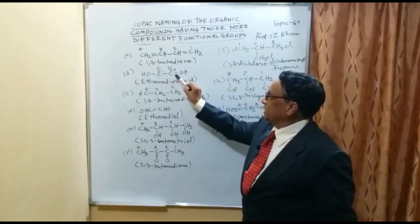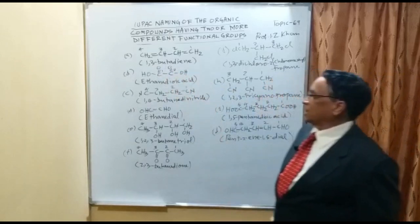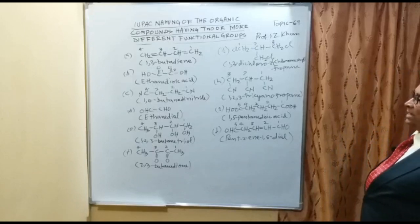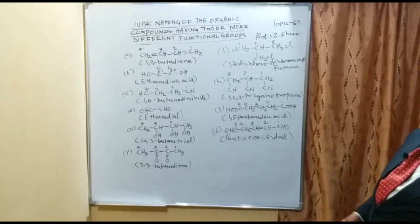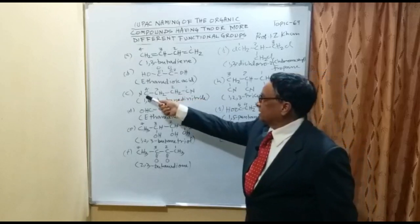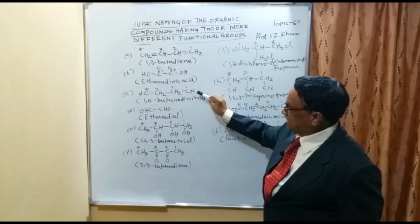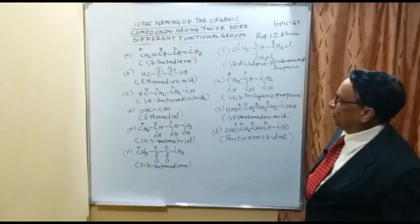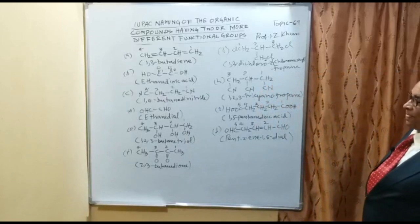Example C has CN (nitrile) groups at positions 1 and 4, so it is written as 1,4-butanedinitrile. Example D has two aldehyde (CHO) groups on an ethane backbone, making it ethane dial — meaning 2 aldehyde groups.